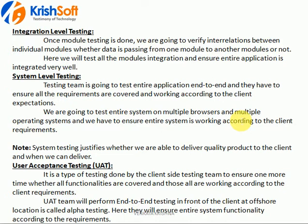The fourth level is user acceptance testing (UAT). After module, integration, and system level testing, the application is handed over to the UAT team. They know what the end users' expectations are, identify any gaps, and check not just functionality but also user friendliness of the application. They can do this because they work closely with the end users and the client, and know what type of application end users will like.